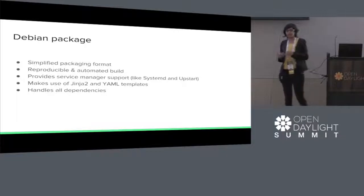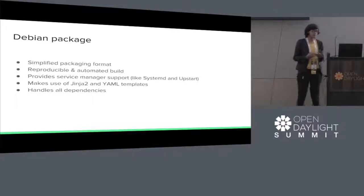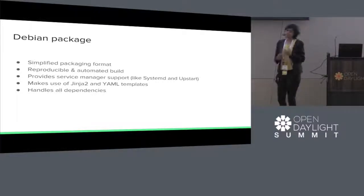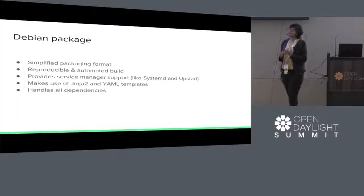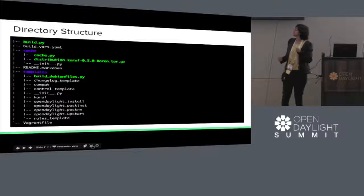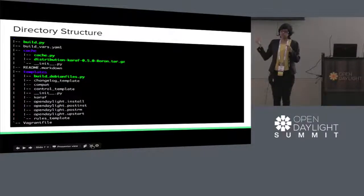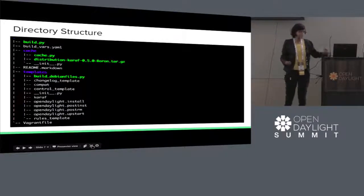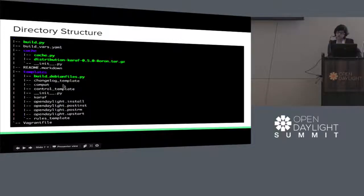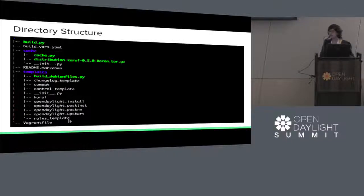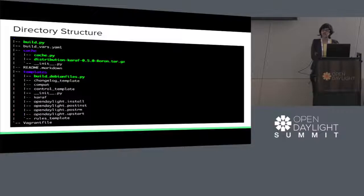The Debian package I built is a very simplified, reproducible, and automated packaging format. It provides service manager support like Systemd and Upstart, and makes use of Jinja2 and YAML templates — so it's basically dynamic. buildDebianFiles.py builds all the files needed for Debian packaging using templates — changelog template, control template, rules template, and others. These files are made use of by buildDebianFiles.py using the YAML variables file.